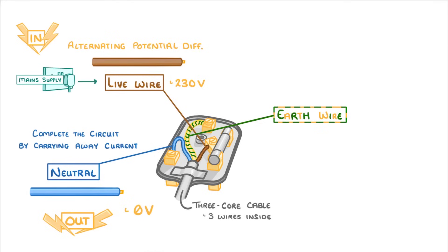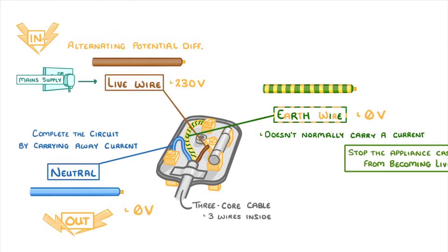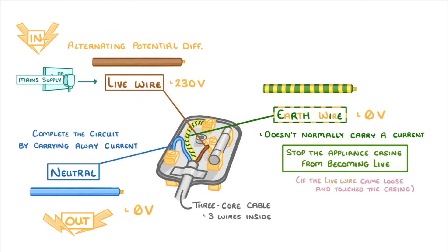Lastly we have the earth wire which is striped green and yellow. The earth wire doesn't normally carry a current at all and has a potential difference of zero volts. Its role is to stop the appliance casing from becoming live which could happen if the live wire came loose and touched the casing.